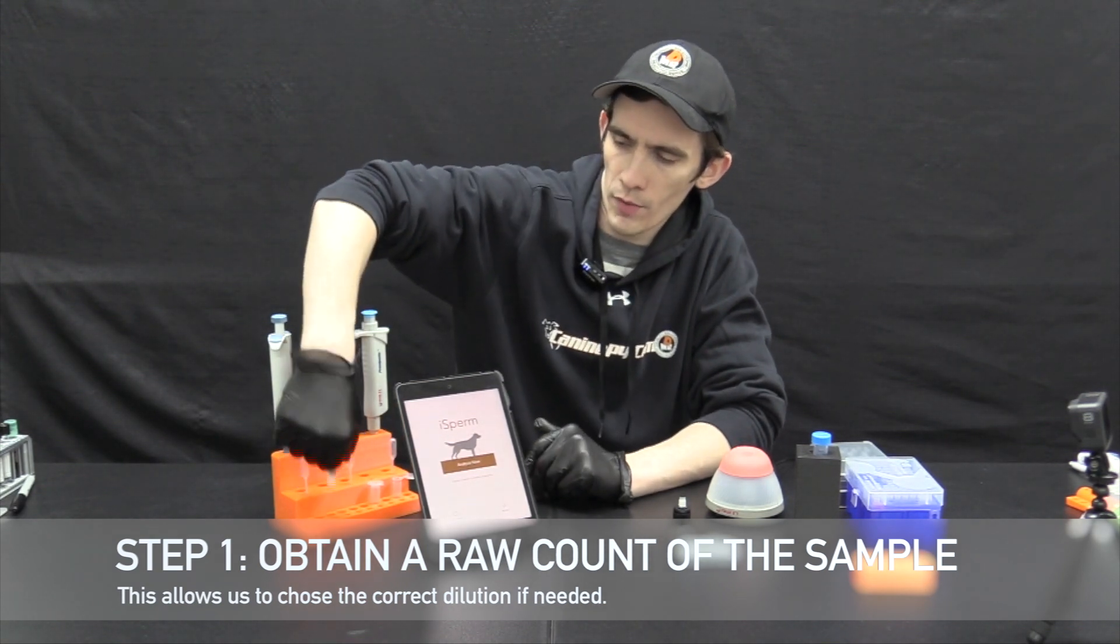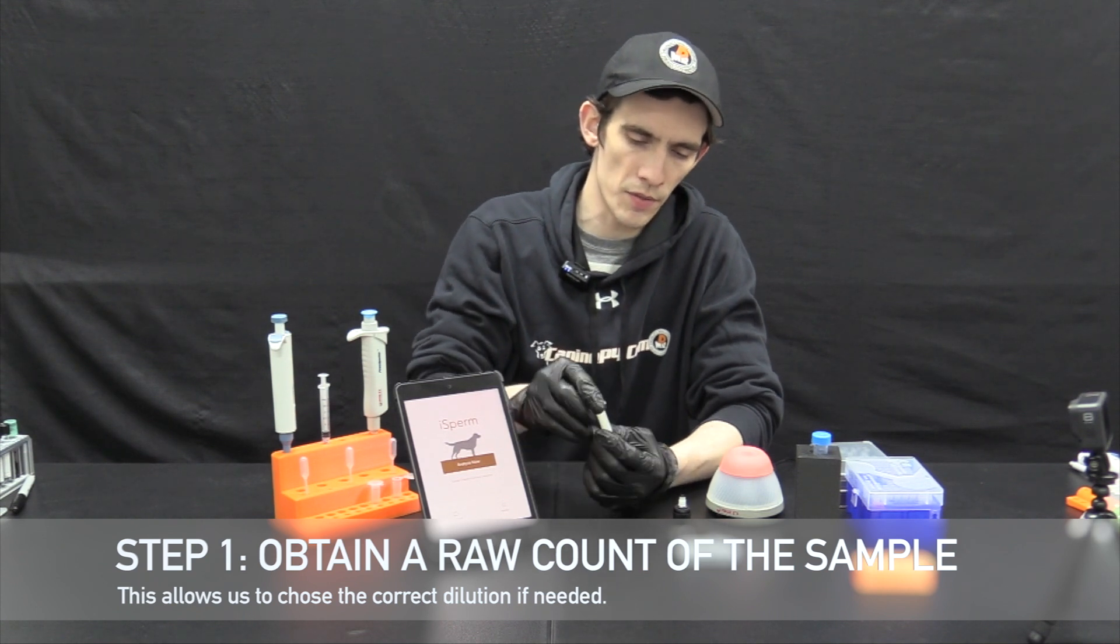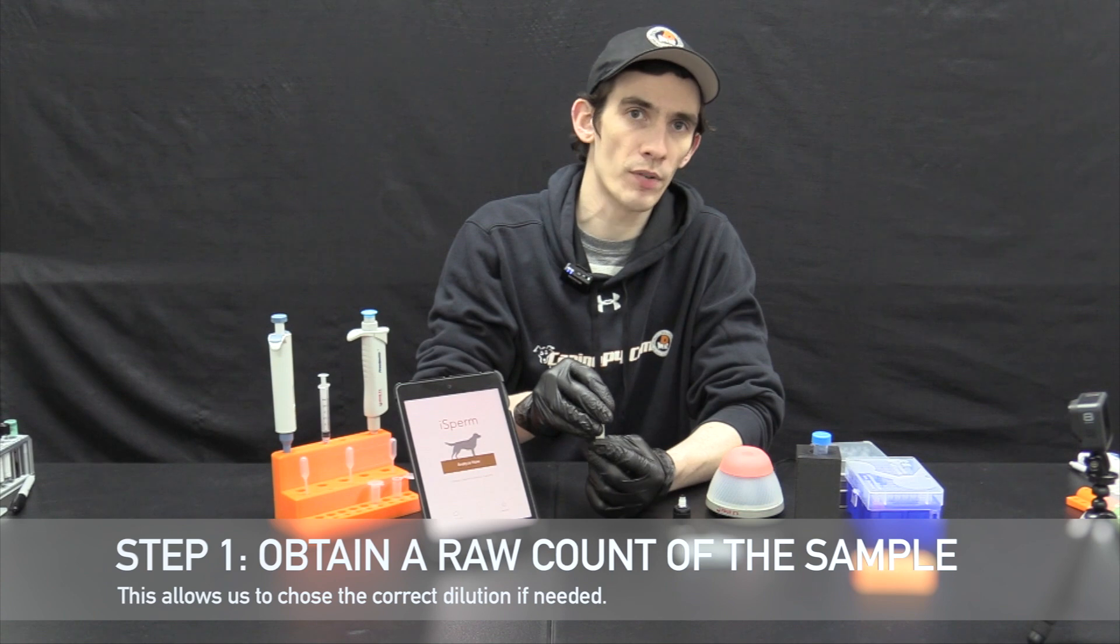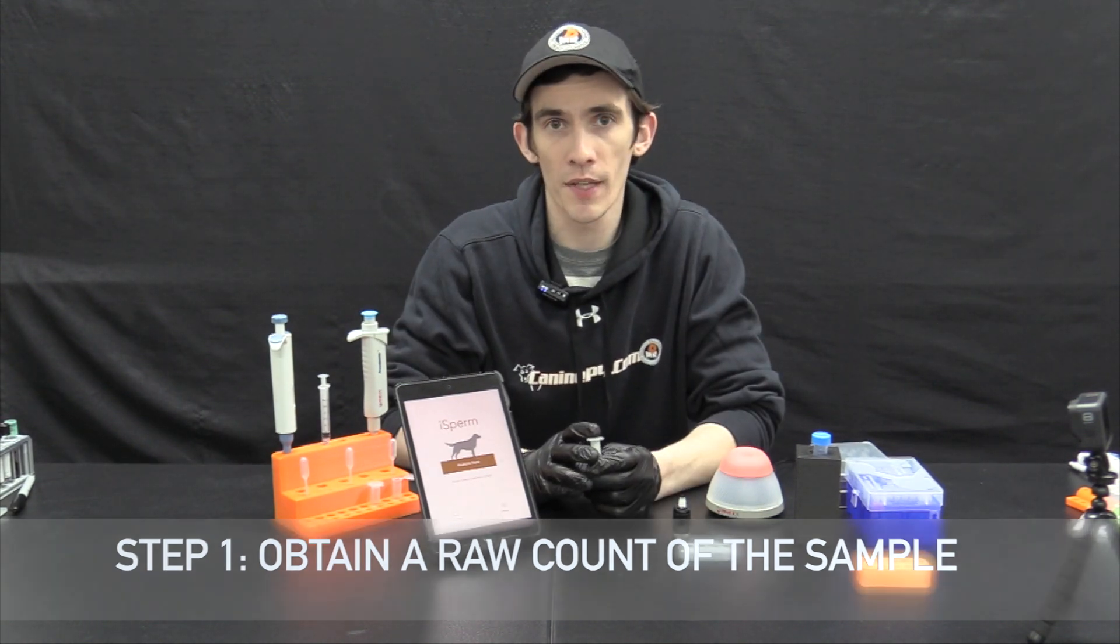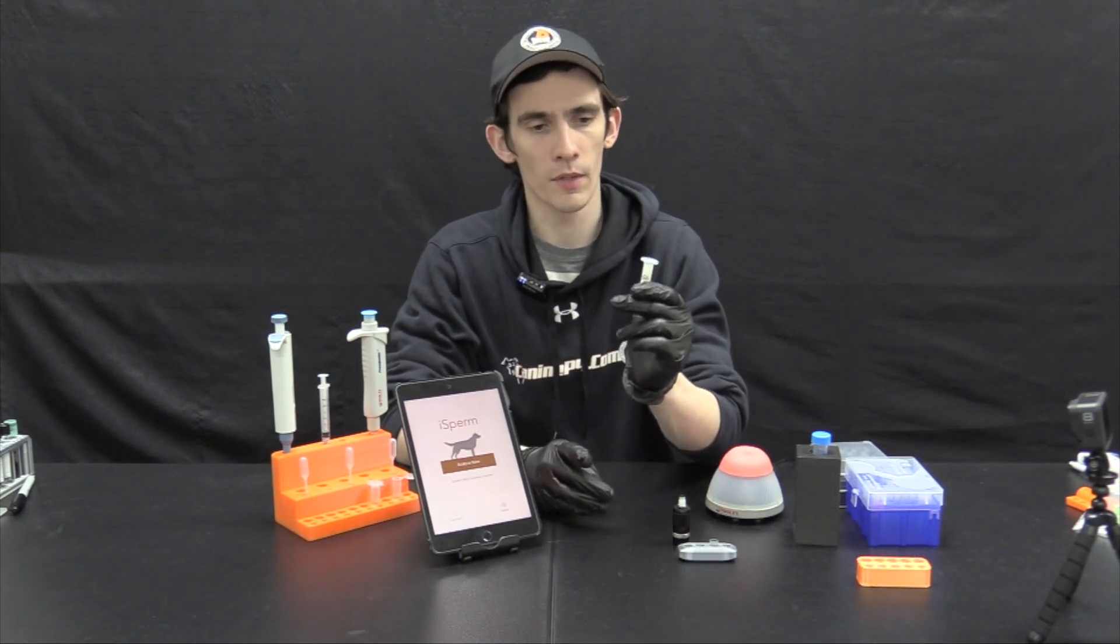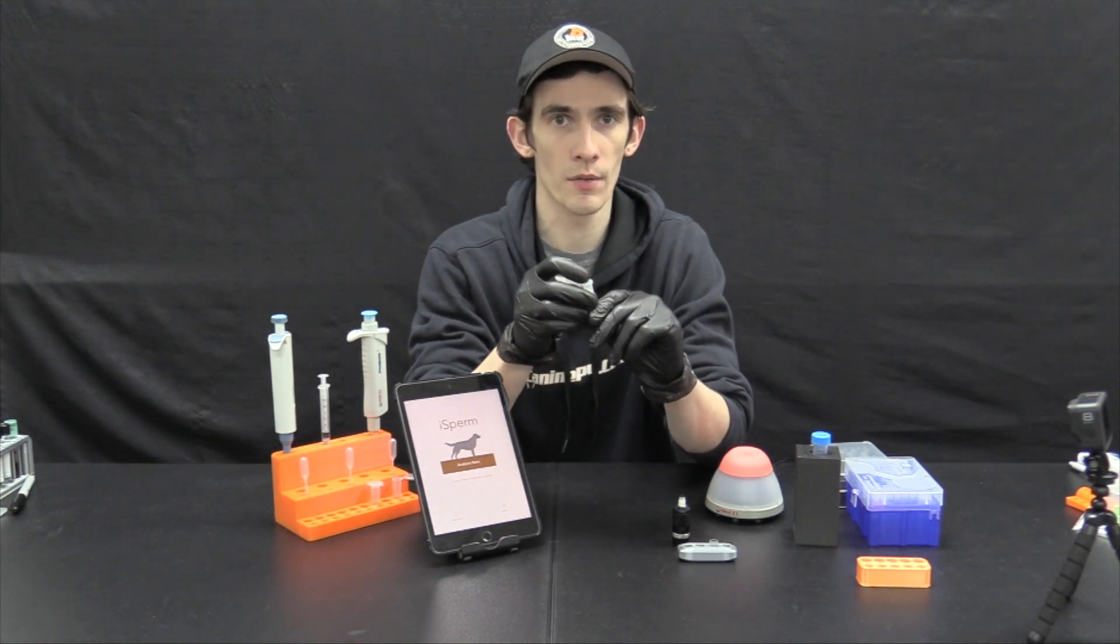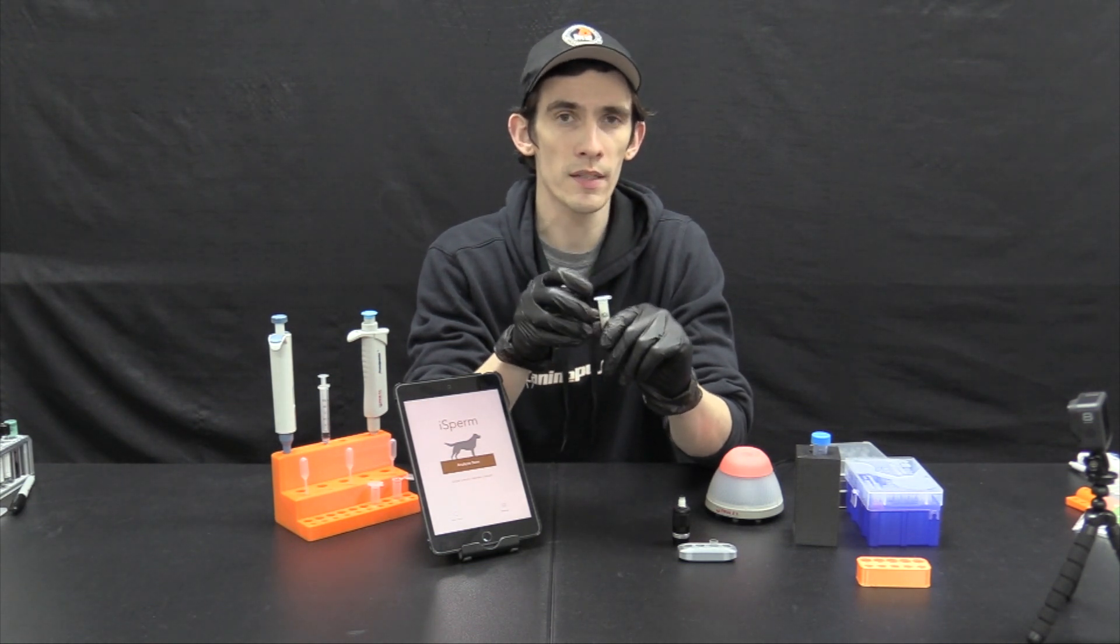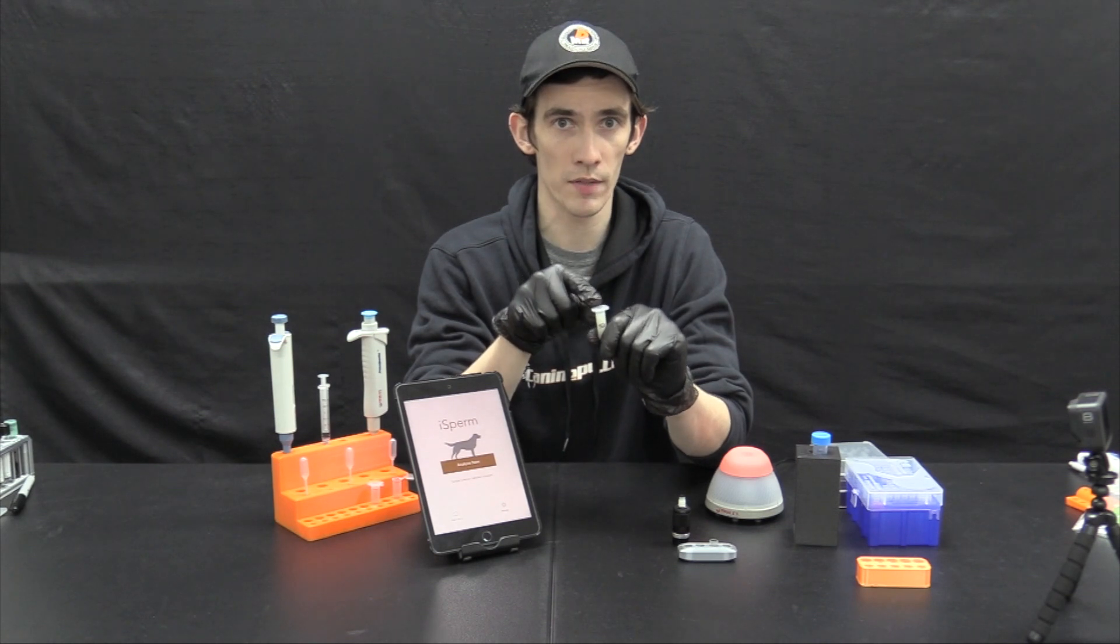So here we have raw undiluted semen with no extender in it. You can see it's kind of that milky white color. Now perform any processing you would normally do prior to taking this reading. For instance, removing any prostatic fluid can and should still be done prior to getting the raw analysis, but hold off on extending your semen until after we get the raw to help you easily calculate what extension ratio you need to get your progressive reading.